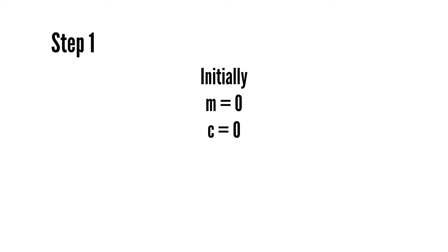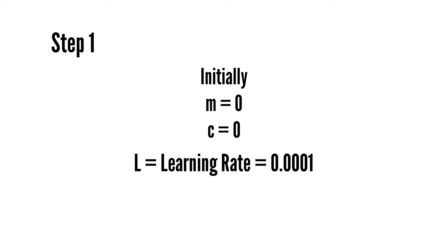Initially, let m = 0 and c = 0, and let the variable l be our learning rate. The learning rate controls how much the values of m and c change with each step. l should be a very small value like 0.0001 for good accuracy. If l is too high, gradient descent won't reach the minimum and will keep oscillating. If l is too small, it will take many iterations to reach the accurate value.